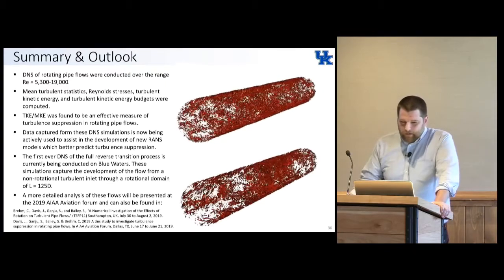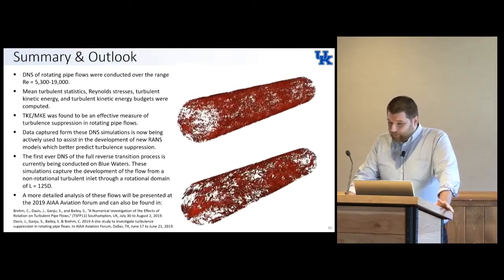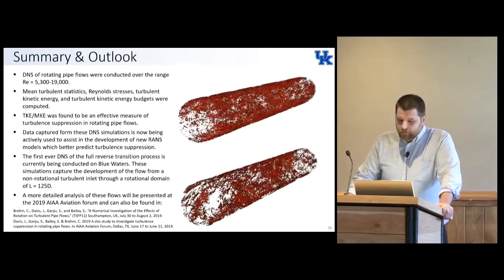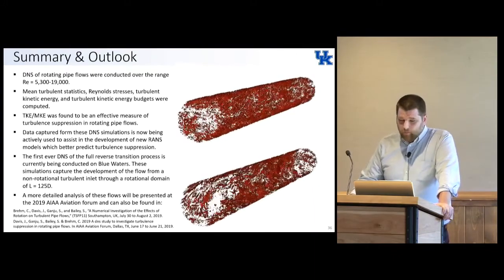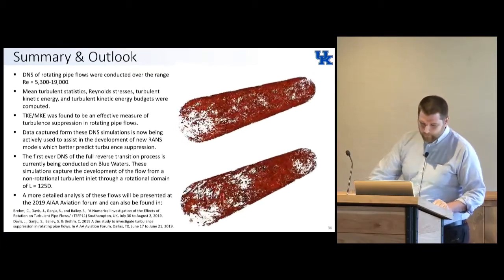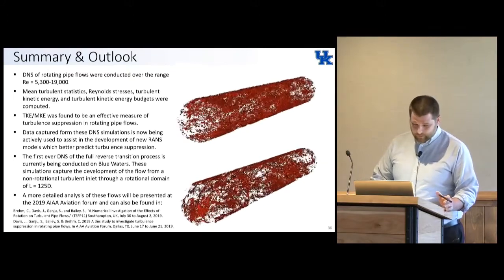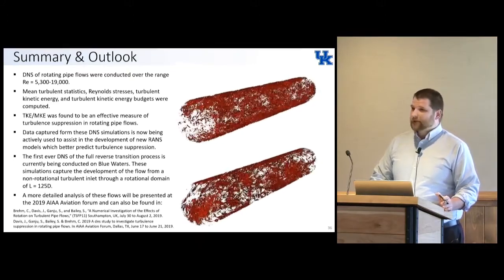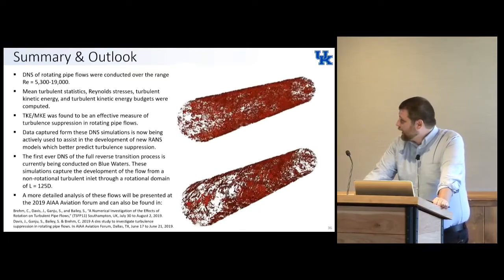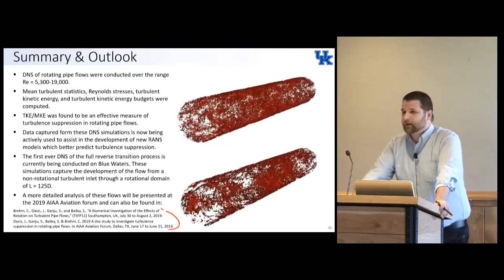In summary, we conducted DNS over a range of Reynolds numbers higher than has been conducted before, captured extensive turbulence statistics, found an effective way to quantify turbulence suppression, and our data is already being used to help improve RANS models to get into the hands of engineers designing better products. In the future, we are conducting simulations of the full reverse transition process, which will answer a lot of questions in this field. I'll be at the AIAA Aviation Forum speaking about this in more detail, and we've also got a couple of conference papers available if you're interested.